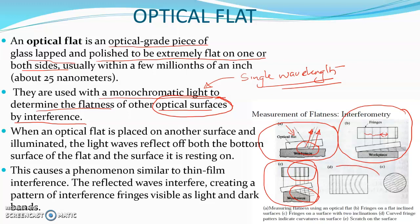In picture D, you can see curved fringe patterns, which is an indication of curvature on the surface — it may be a concave or convex surface, and the patterns will appear curved. In picture E, you can see an indication of a scratch on the surface — only that portion of the pattern shows some variation.